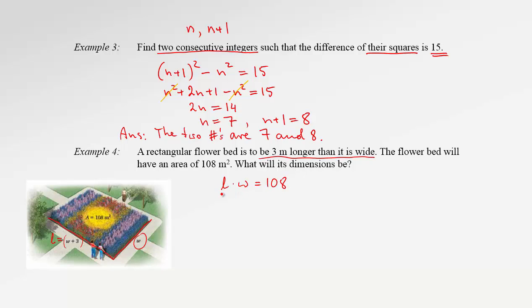But we have to work with just one variable, not two. Therefore, instead of length, we must use the expression W plus 3. So, W plus 3 times the width, W equals 108.